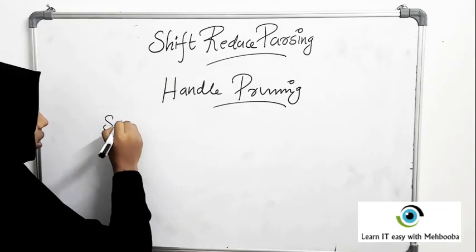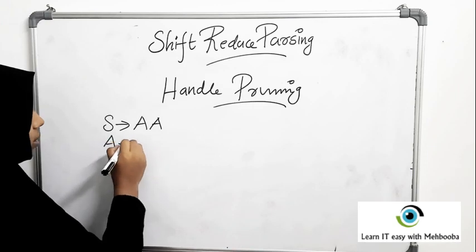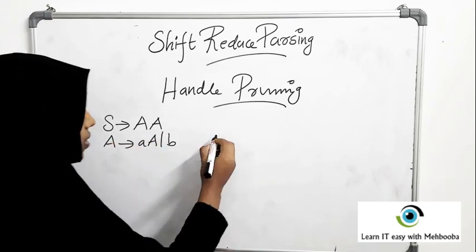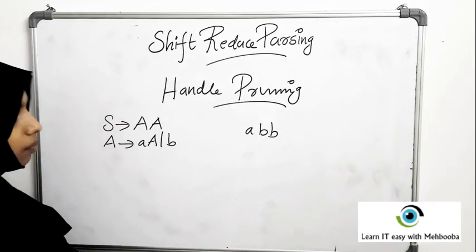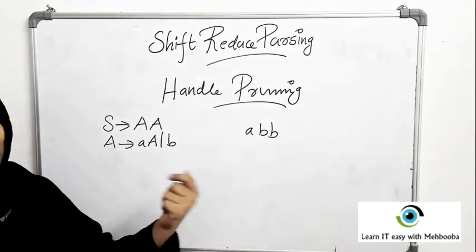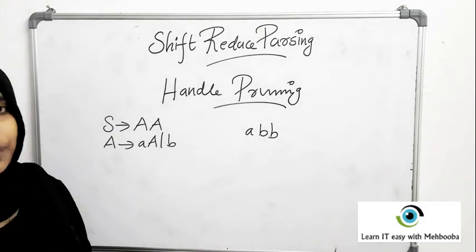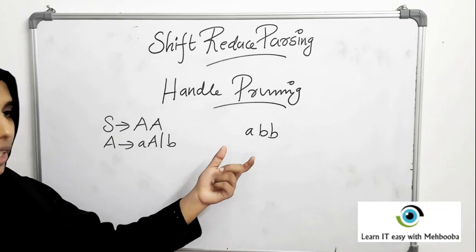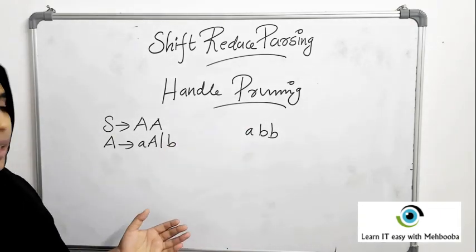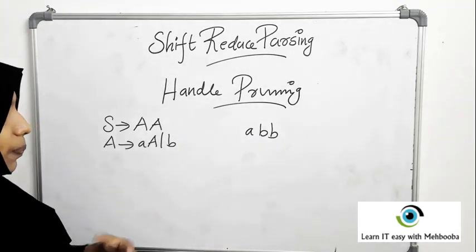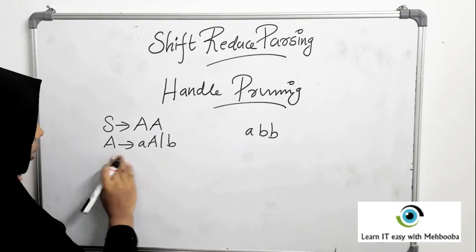Considering an example: the grammar is S gives A A, and A gives A A or b. If we have the string a b b at hand, then a handle is the leftmost substring which matches with the right-hand side of some production, and when we replace that handle with the left-hand side, you get one step ahead in the rightmost derivation.